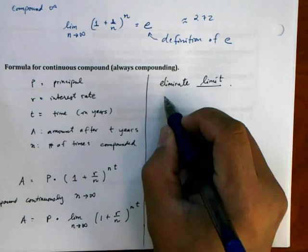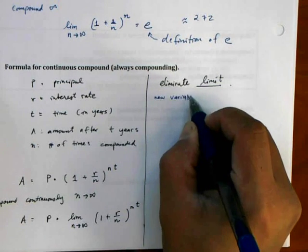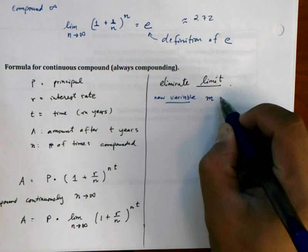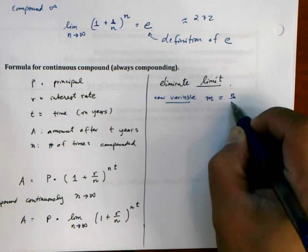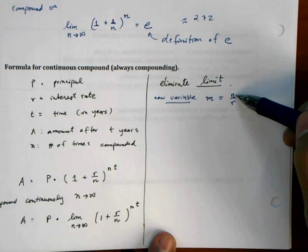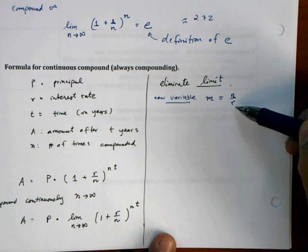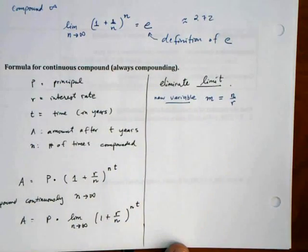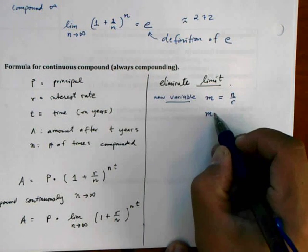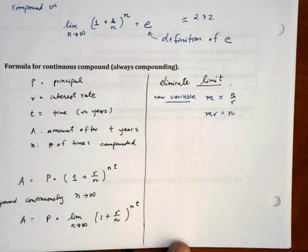I'm going to create a new variable M and I'm going to say that it's equal to N over R. There's nothing wrong with this because I know that N exists, it's non-zero, and R exists, it's also non-zero. So this is fine. And I can also say that MR is equal to N, just multiplying both sides by R.